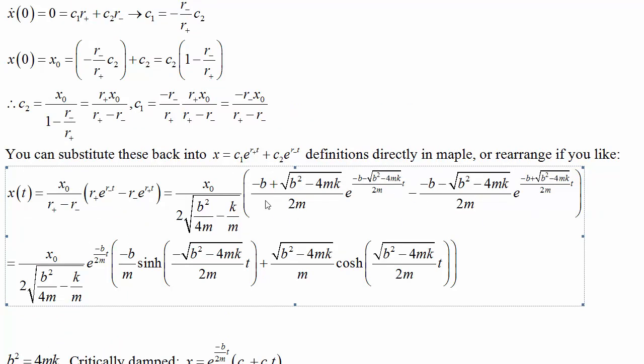If you like, you can rearrange it. So basically, it's just a sum of constants times these exponentials, but we just found the specific values of them. You can rearrange this into sinh and cosh as explained.